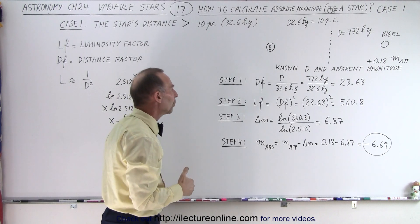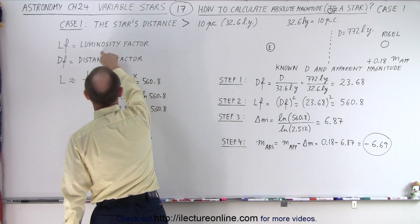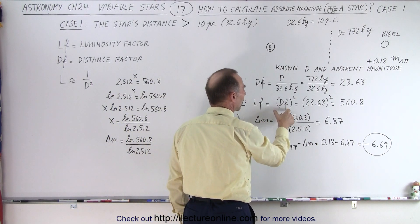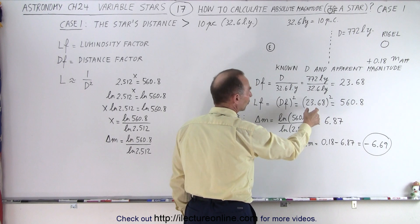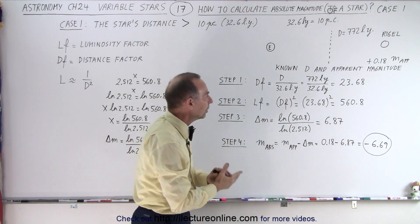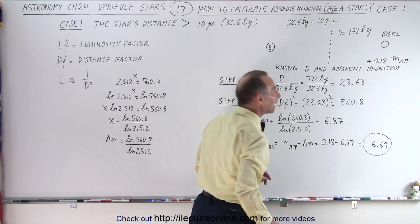The next step, we need to find the LF, what we call the luminosity factor. The luminosity factor is going to be the distance factor squared. Again, we're going backwards, so in the other process, we have to take the square root. Here, we're going to square. The distance factor squared is 560.8.